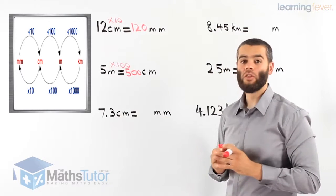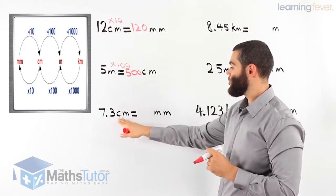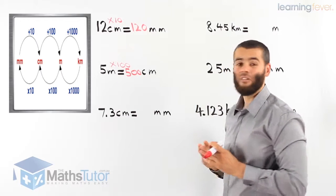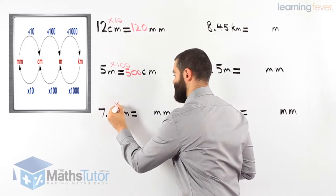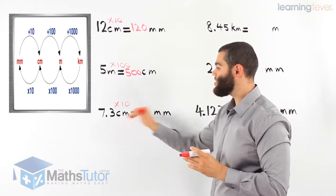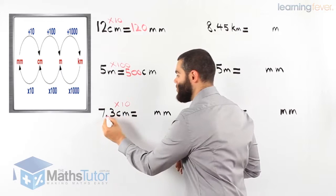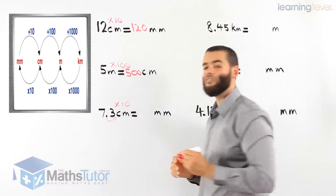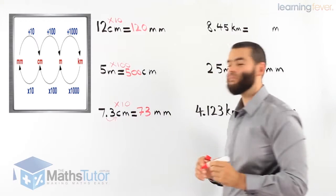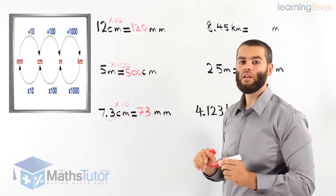Here we have 7.3 centimetres — how many millimetres? We know we're going from centimetres to millimetres, so we times by 10. You can use your calculator, but this is something simple. In decimals, when we have 7.3 times 10, we move the decimal to the right once because there is one zero. So it becomes 73 millimetres. 7.3 centimetres is 73 millimetres.